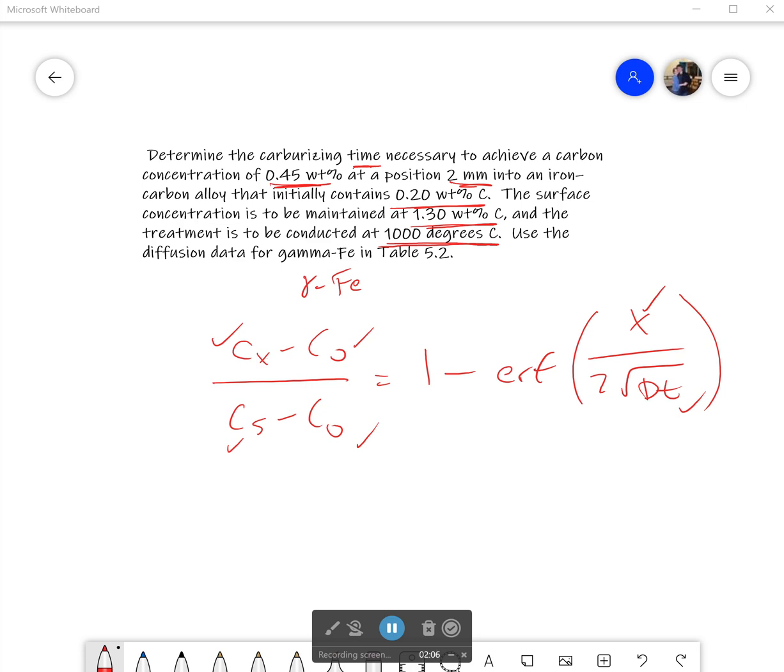However, however, our diffusion coefficient at least, we can get that information from table 5.2. Okay. So, first, let's deal with that error function. That's terrifying enough in and of itself. Now, before we can actually work with it, we're going to have to plug everything that we know in. And so, I'm going to go ahead and do that. So, I'll get 0.45 minus 0.2 all over 1.30 minus 0.2 is, and that's all going to be equal to 0.2273 is equal to 1 minus ERF. I'm just going to say Z for the moment.